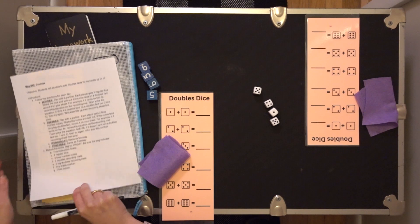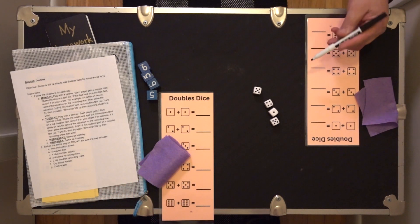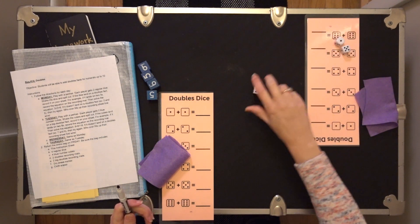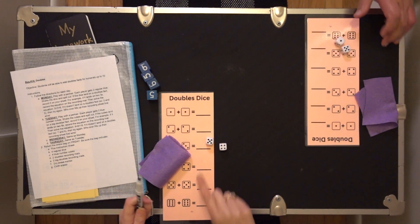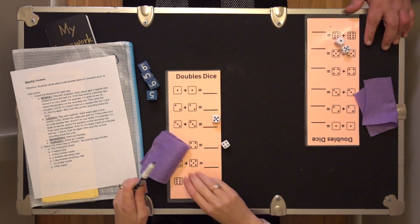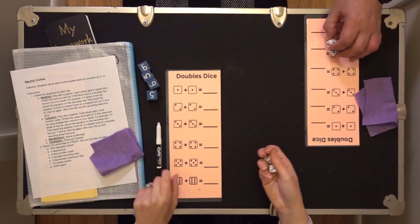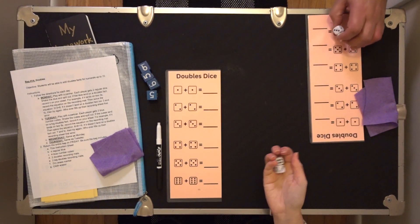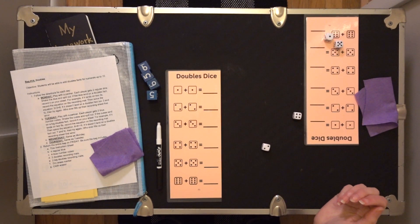Alright, so each partner has two dice. We're going to start on Monday with the two regular dice. Now, we are going to roll. I'm going to do a practice. Hold on, my assistant. We're going to do a practice shake and spill.